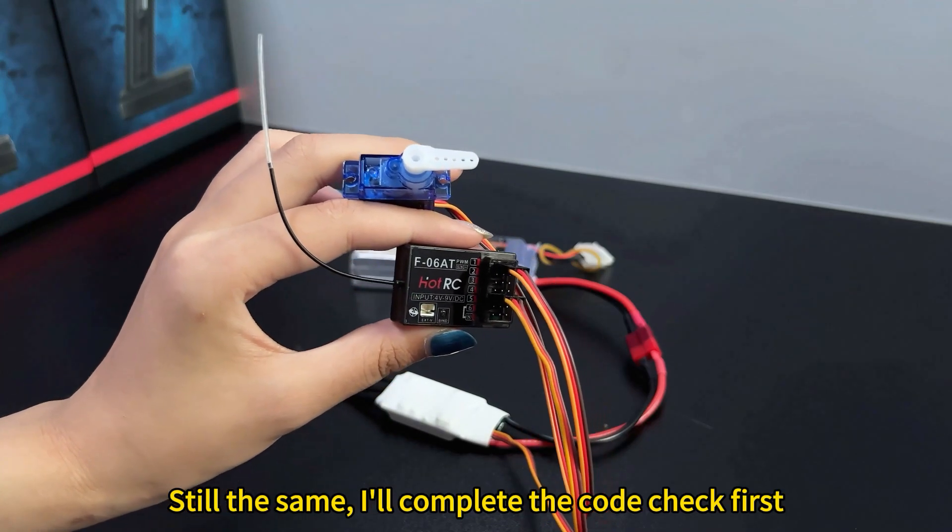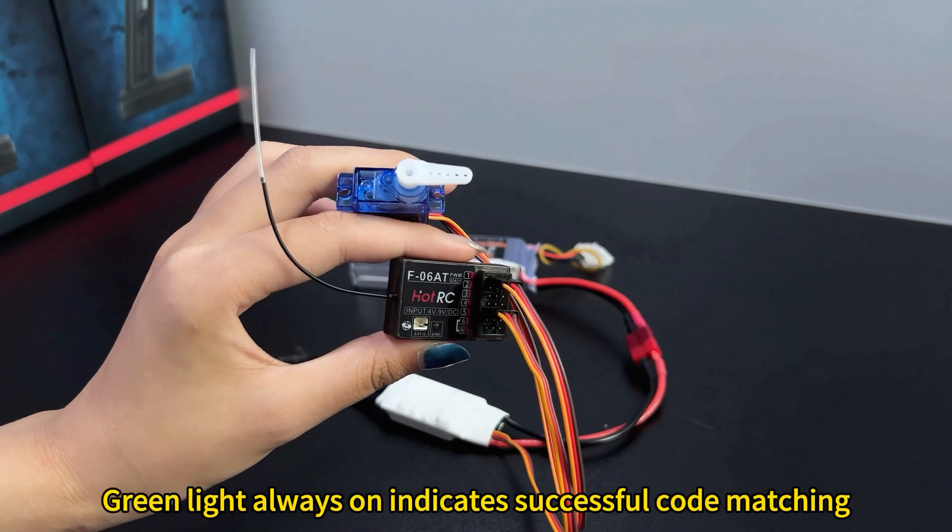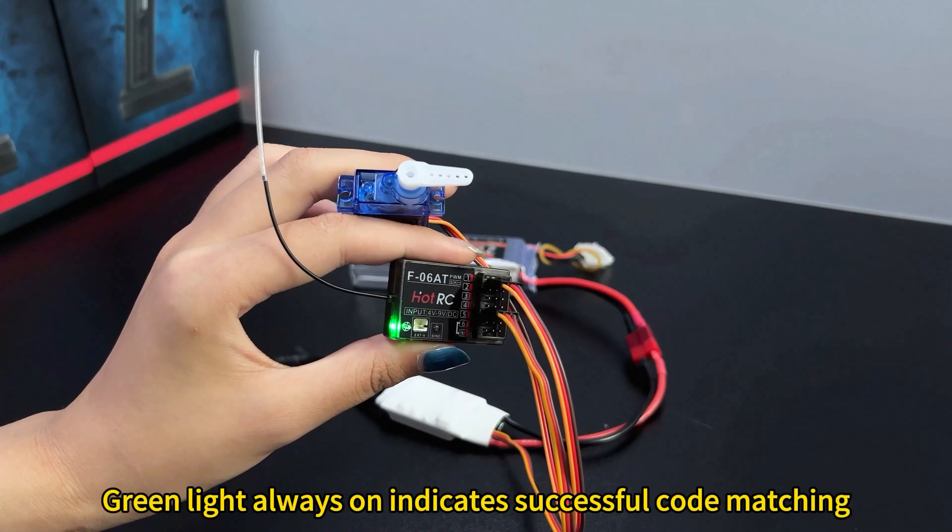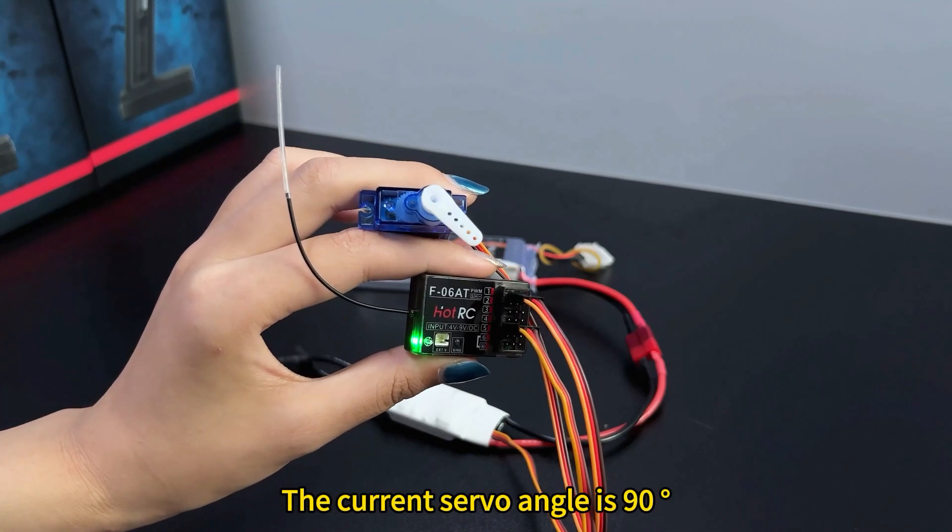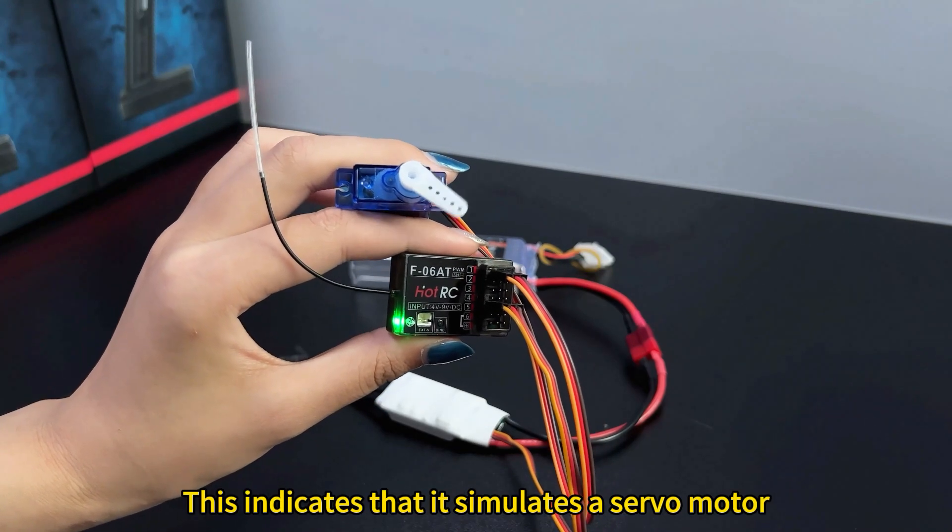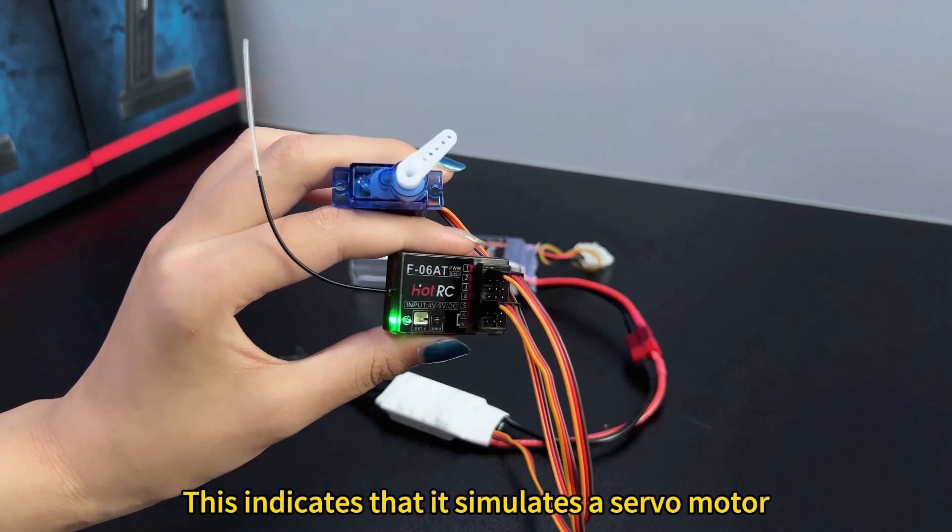Still a thing. I'll complete the code check first. Green light always on indicates successful code matching. Push channel E. The current servo angle is 90 degrees. This indicates that it simulates a servo motor.